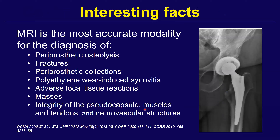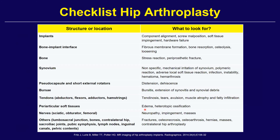MRI is the most accurate modality for a variety of abnormalities around implants: periprosthetic osteolysis, occult fractures, periprosthetic collections, polyethylene wear-induced synovitis, infection, adverse local tissue reactions — which is the preferred term over pseudotumor — periprosthetic masses, and integrity of the pseudocapsule, muscles, tendons, and neurovascular bundle. MRI has almost consistently been found more accurate than CT and radiography for these findings. We've published a checklist in Radiographics — reviewing findings from the implant outward in an envelope fashion — as a guide for dictating these cases clinically.